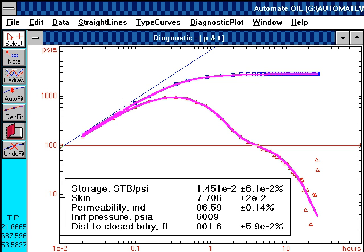And as the fifth step, we evaluate the confidence intervals and we find all of them to be within tolerance. So therefore, our final interpretation is that of a radial flow model with an impermeable boundary approximately 800 feet from the well.